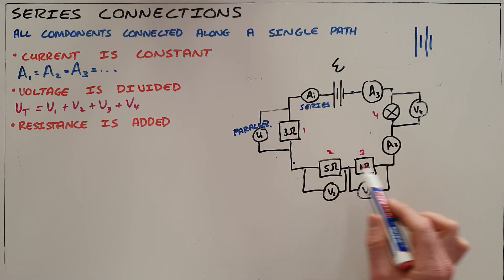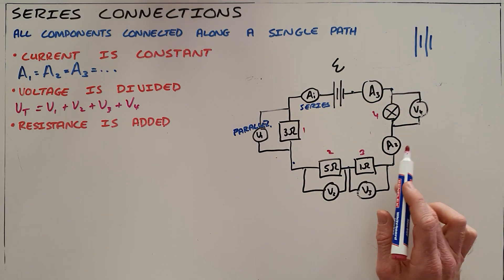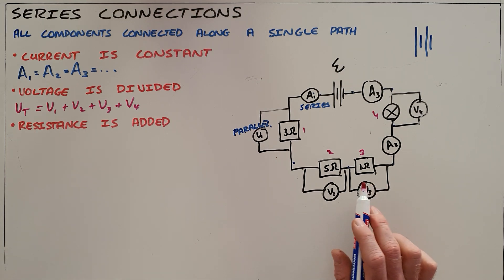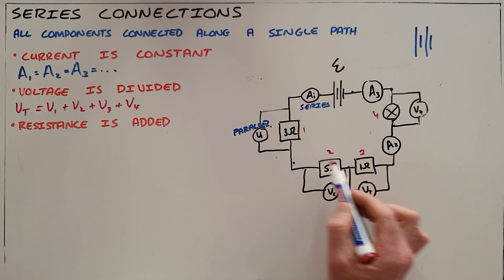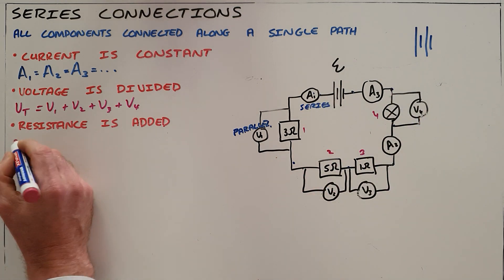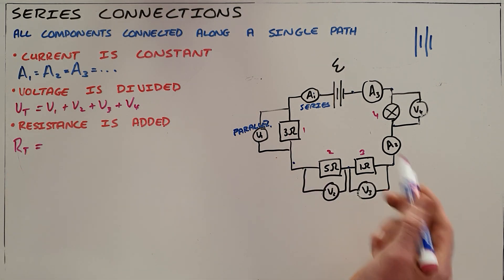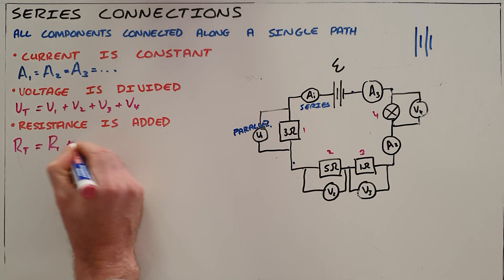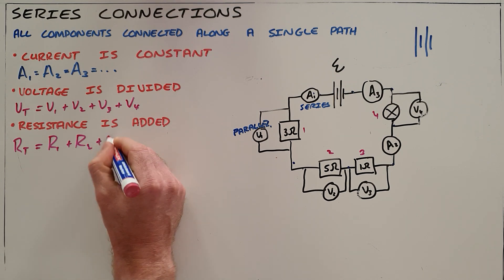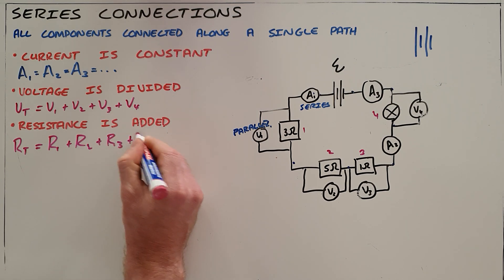So we say that voltage is always divided in a series circuit, and finally, the total resistance in a circuit is added because we're saying that the current must pass through every single resistor. That means that the total resistance in a circuit would be equal to the sum of each resistor in that circuit: r1 plus r2 plus r3 plus r4 in this case.